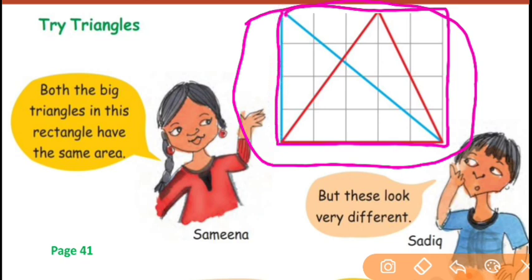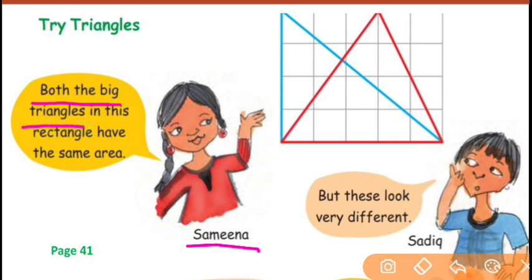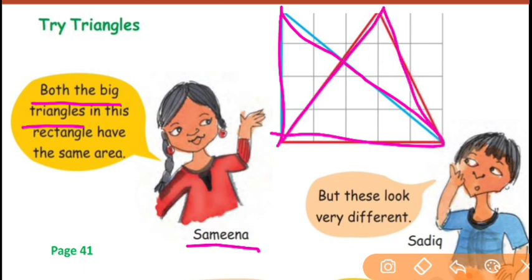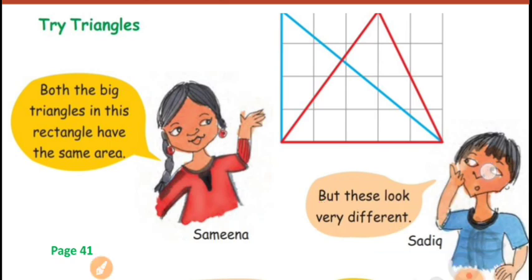The area of this rectangle is 20 square centimeters. Now see what Samina is saying. Samina says both the big triangles — the blue triangle and the red triangle — in this rectangle have the same area. Sadiq is saying they look very different, so how can the area be the same? Let's go check if it's true.